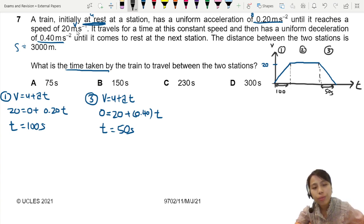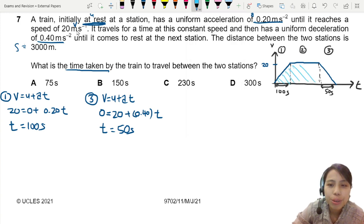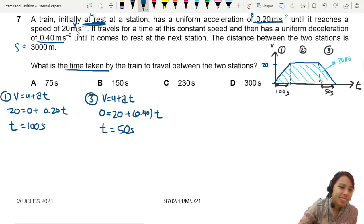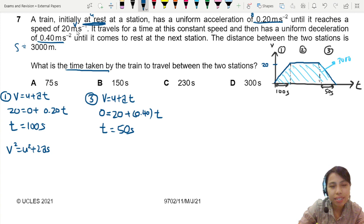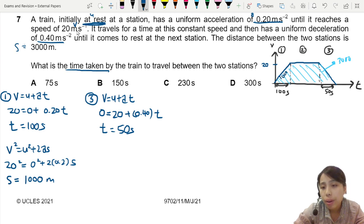We need to know more information about the middle. Something we have not used is the fact that the distance, the total distance travel is 3,000. In other words, you can say like the total area, this whole area under the graph is 3,000. So let's try this. Let's find the distance travel in each of the sections. So for 1, let's go back. I think we'll use V square equals to U square plus 2AS. Because we've got information for it. So let's go. 20 square, 0 square, 2, 0.2 times S. So the distance in section 1 is 1,000 already. We write inside here 1,000 meter.